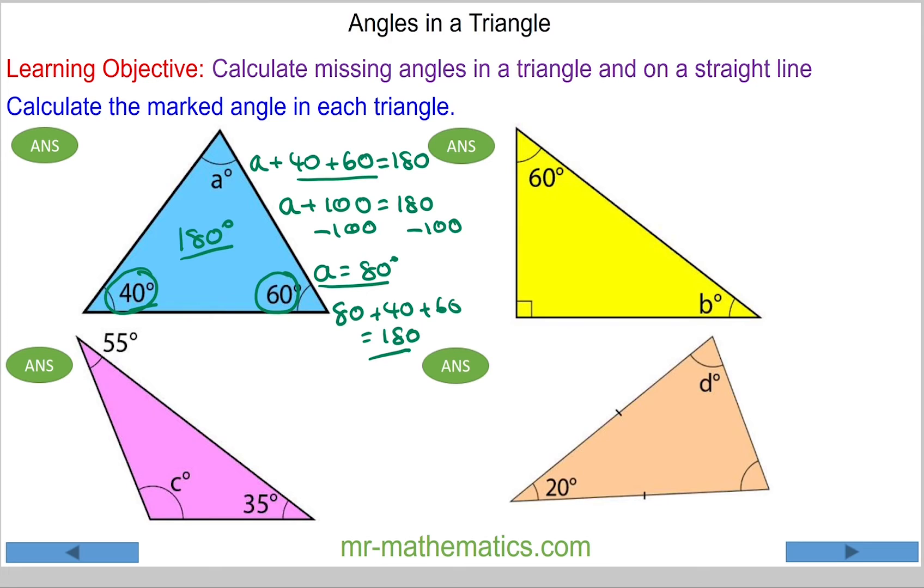For question b, we know this symbol here means 90 degrees, so angle b plus the 90 plus the 60 will equal 180 degrees. We can add these two together, so b plus 150 will equal 180.